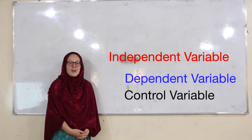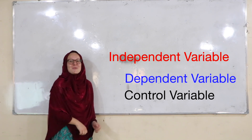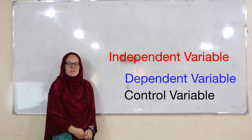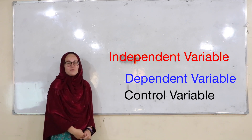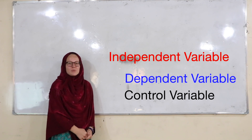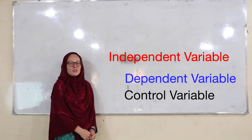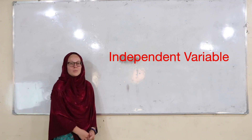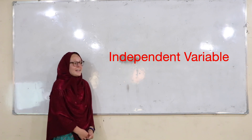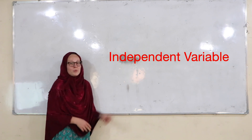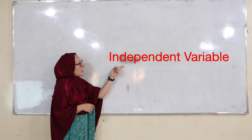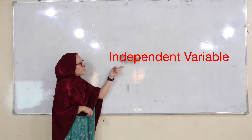You can write it in either the if-then format or as a statement, whichever you prefer. Let's begin. Before we get to the experiment itself, let's review what each of these three types of variables are so that you're sure that you're identifying them correctly in the experiment. First, the independent variable — this is the thing that you as the scientist are changing.